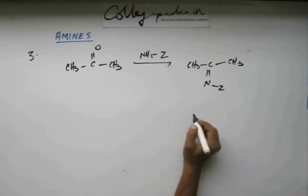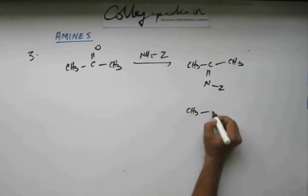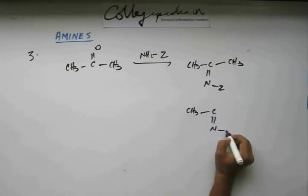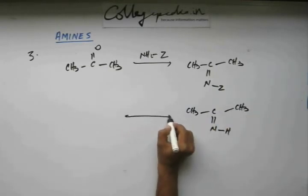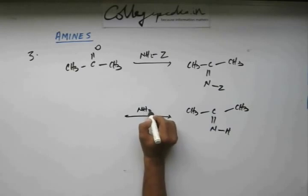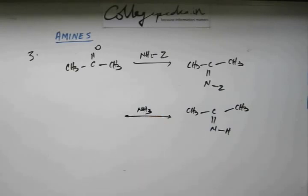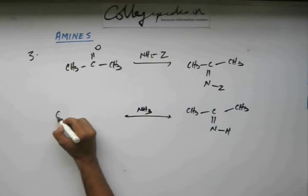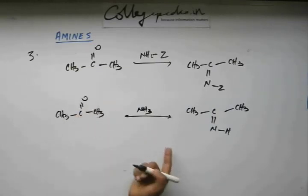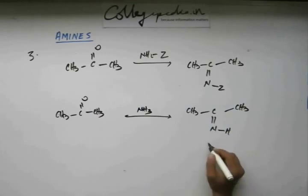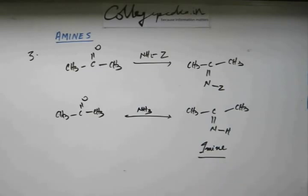Now, this Z can be hydrogen as well. And if Z is hydrogen, this NH2Z will be NH3, ammonia. If you are having the reaction on carbonyl compound with ammonia, you are going to get this. This is called imine.